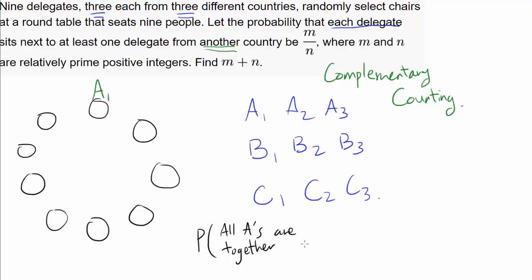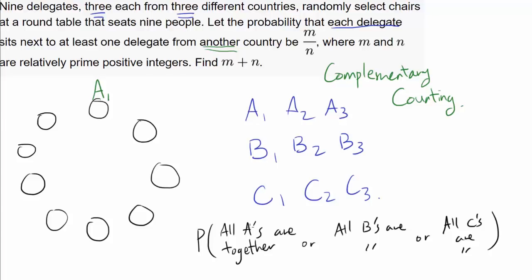Hopefully this makes sense. Because if A sub 1, A sub 2, and A sub 3 are next to each other, there is no possible way that every single delegate is sitting next to at least one delegate from another country. The middle A will be sandwiched between delegates of the same country — namely A — so the middle A is not sitting next to any delegate from another country. So we have an arrangement we do not want. Either all A's are together, or all B's, or all C's, or some conjunction of these.